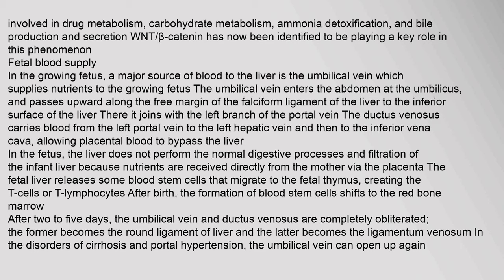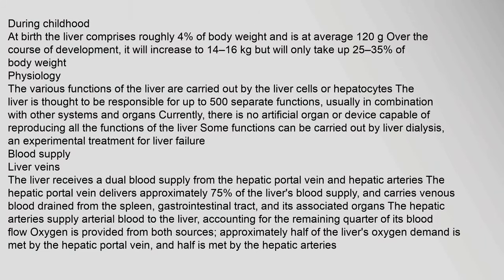After birth, formation of blood stem cells shifts to the red bone marrow. After two to five days, the umbilical vein and ductus venosus are completely obliterated; the former becomes the round ligament of liver and the latter becomes the ligamentum venosum. At birth, the liver comprises roughly four percent of body weight at an average of 120 grams, increasing to 1.4 to 1.6 kg through development.